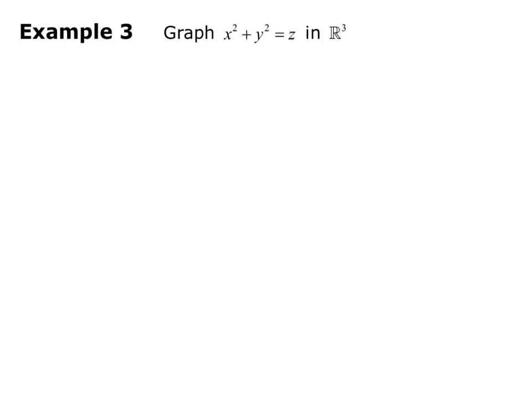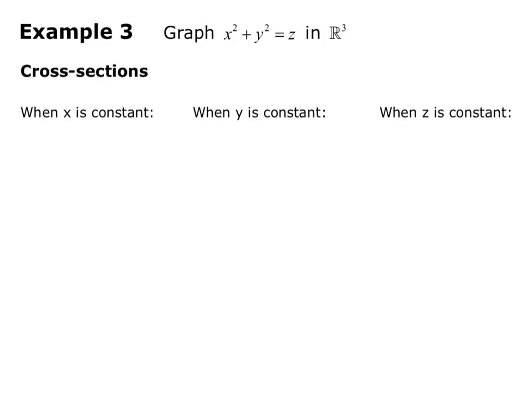In example 3, we're asked to graph x squared plus y squared equals z in R3. We want to figure out the three different cross sections: when x is a constant, when y is a constant, and when z is a constant.